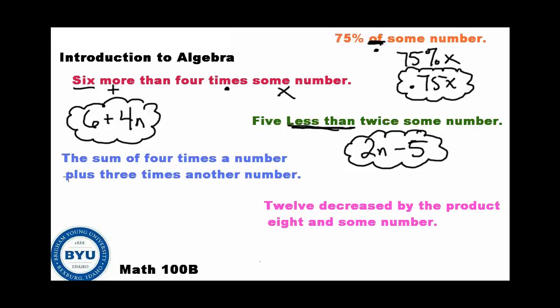The sum of four times a number plus three times another number. So sum of four times a number, well, that's four times a number plus three times another number. So three and it's a different number. So I'm going to use a different letter there. I went ahead and used n and m, but you could have used either numbers on that. Okay.